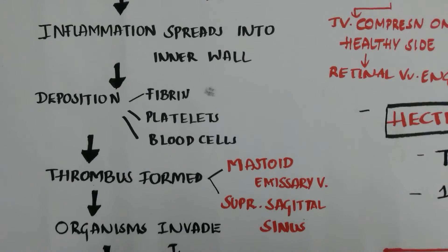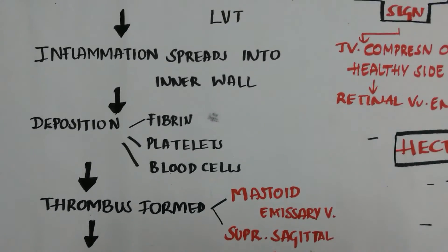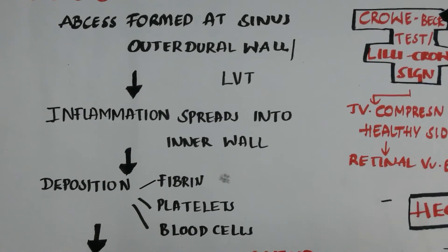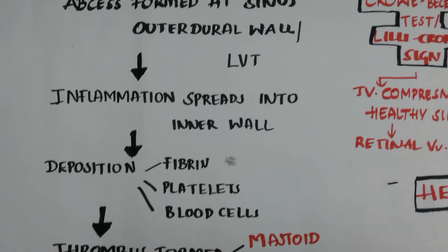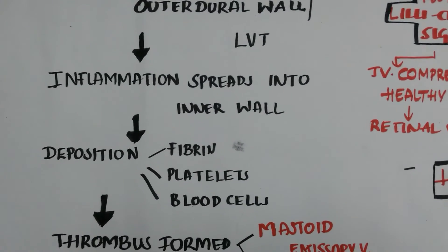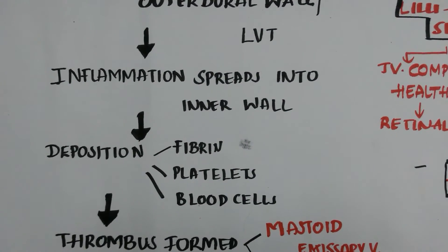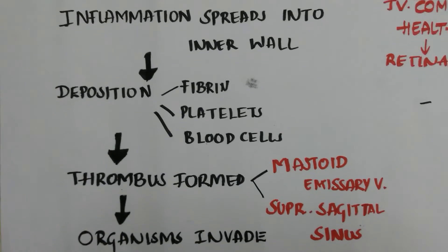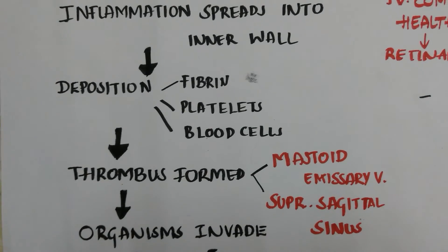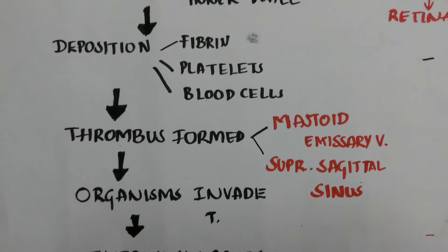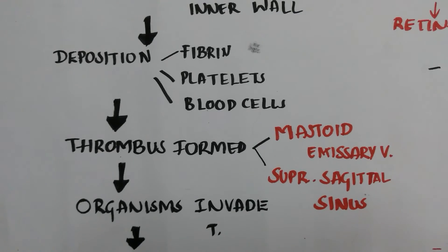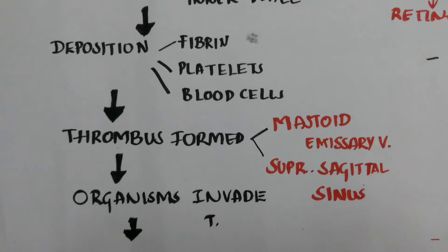Pathology: An abscess forms at the sinus outer dural wall, causing local venous thrombophlebitis. From here, inflammation spreads into the inner wall with deposition of fibrin, platelets, and blood cells. A thrombus is then formed, which may spread into the mastoid emissary vein or superior sagittal sinus.